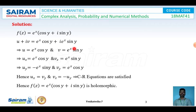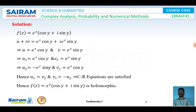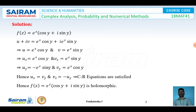Separating real and imaginary parts: u = e^x cos y and v = e^x sin y. Differentiating partially with respect to x, treating y constant: ∂u/∂x = e^x cos y and ∂v/∂x = e^x sin y. Differentiating partially with respect to y, treating x constant: ∂u/∂y = -e^x sin y and ∂v/∂y = e^x cos y.